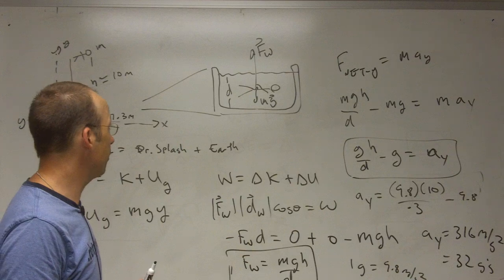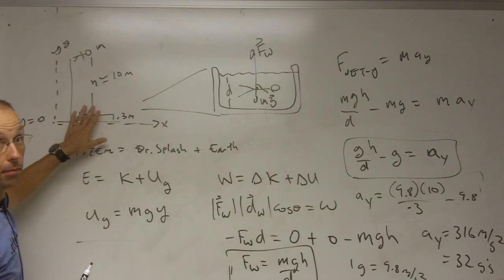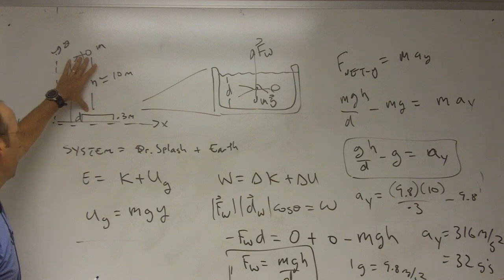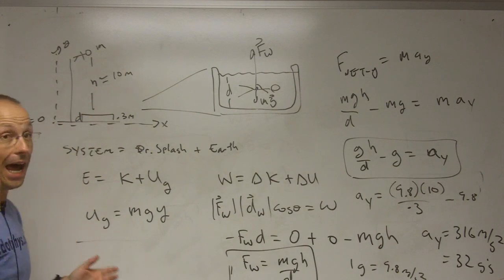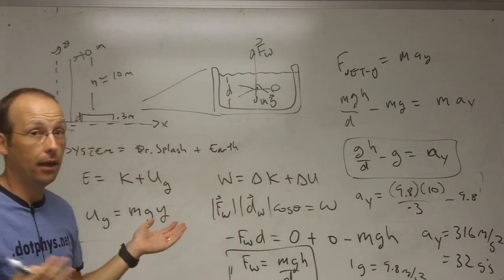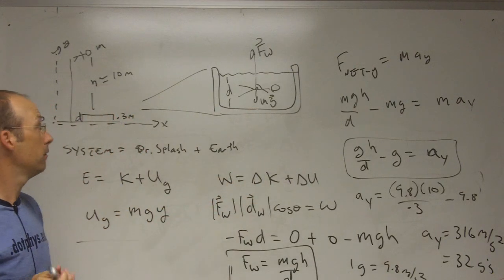So I think the important thing to see here is that, I mean you can make this a pretty complicated problem. You can break it into two parts. This part where he's free falling and this part where he's slowing down. But you don't have to do that. You can just put it all together in one big thing and it's not that bad. Okay.